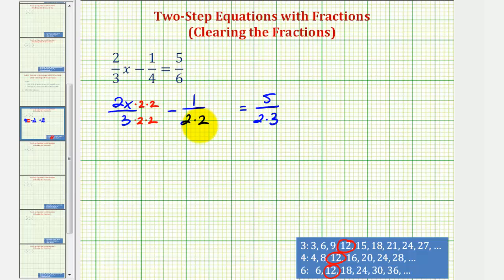And then for the second fraction, notice how it doesn't have any factors of three, but it needs one because the other fractions have one. So we're going to multiply this fraction by three over three. And then the last fraction here needs one more factor of two, so we'll multiply by two over two. Notice now all the denominators are twelve.